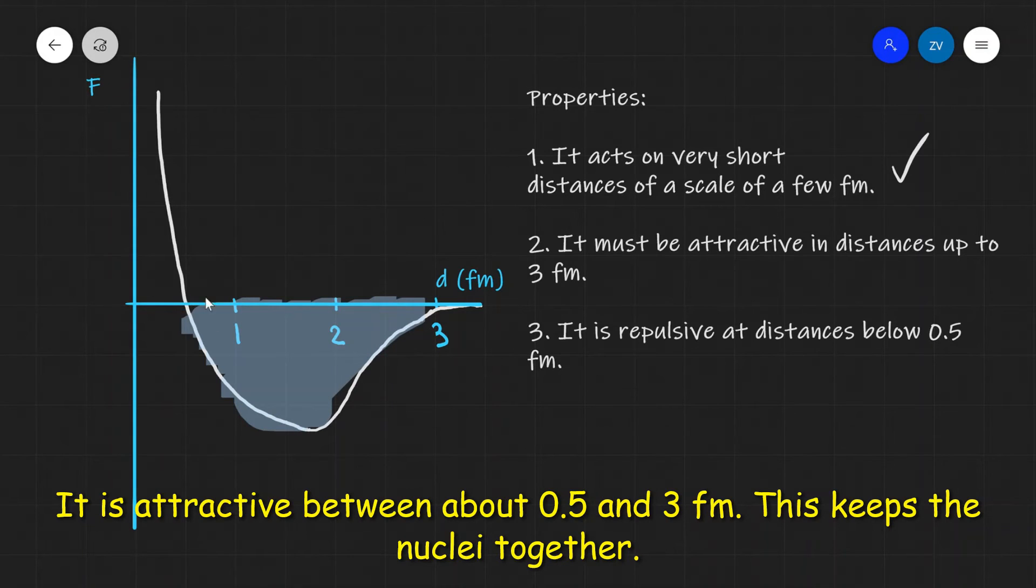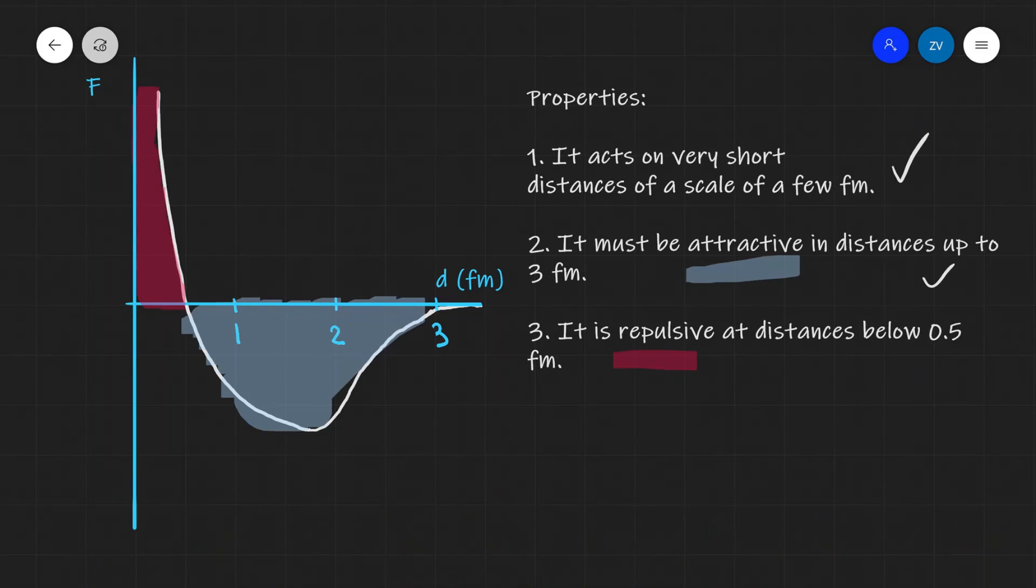As soon as we reach 0.5 femtometers, the force will be turning repulsive. This means that in this region, which is below about half a femtometer, the two particles are going to be repelling. This ensures that two particles do not collapse right onto the same space together.